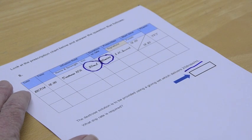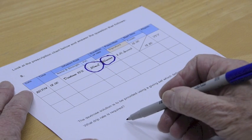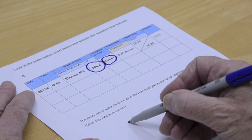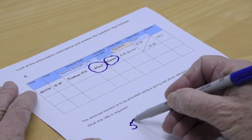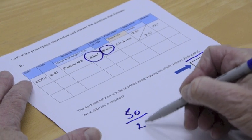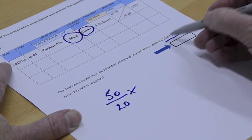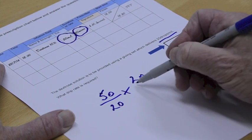So very similar to our other drips over hours, and therefore you set it out in much the same way. What's the volume required? It's 50 over how long—20—times our giving set, which is 20.